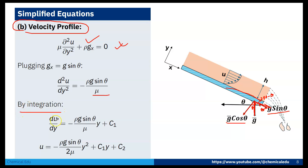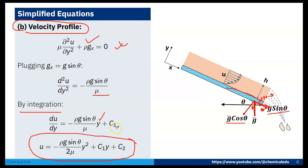Integrating once: du/dy = −(ρg sinθ / μ)y + C1. Integrating again: u = −(ρg sinθ / 2μ)y² + C1·y + C2. Here C1 and C2 are integration constants to be determined from the boundary conditions.